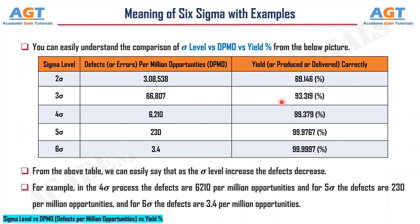Sigma level versus DPMO — defects per million opportunities — versus yield percentage. You can easily understand the comparison of sigma level with DPMO and yield percentage from the table shown. As the sigma level increases, the defects decrease. For example, in a four sigma process the defects are 6,210 per million opportunities; for five sigma the defects are 230 per million opportunities; and for six sigma the defects are 3.4 per million opportunities.